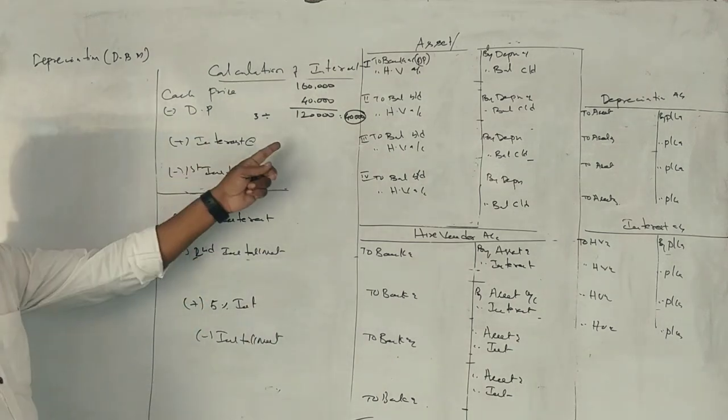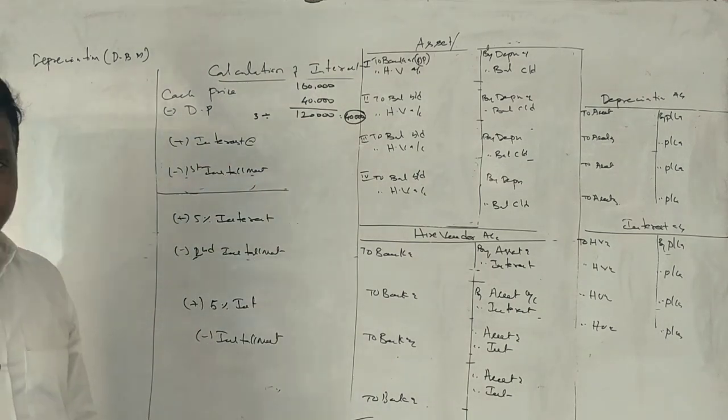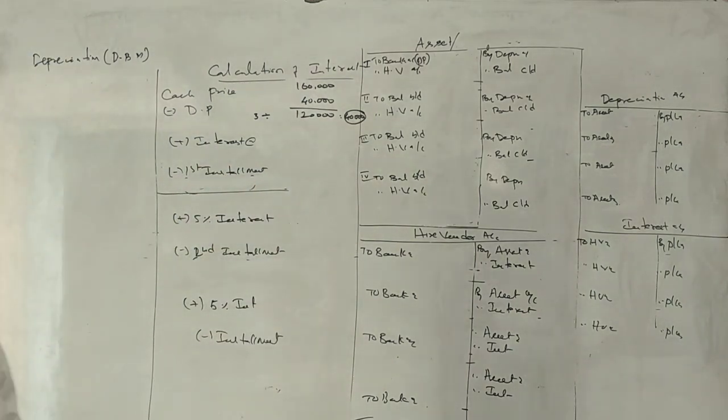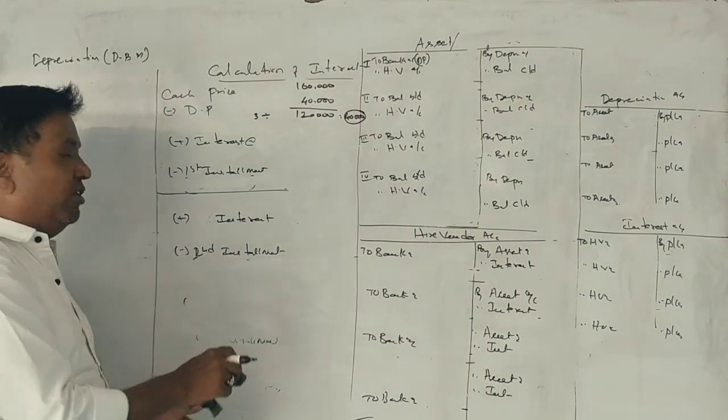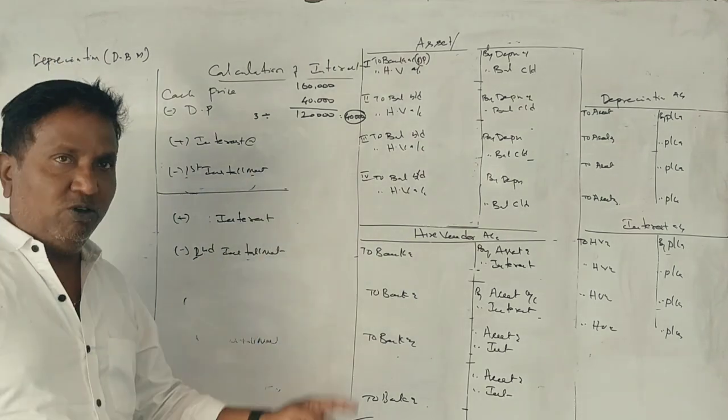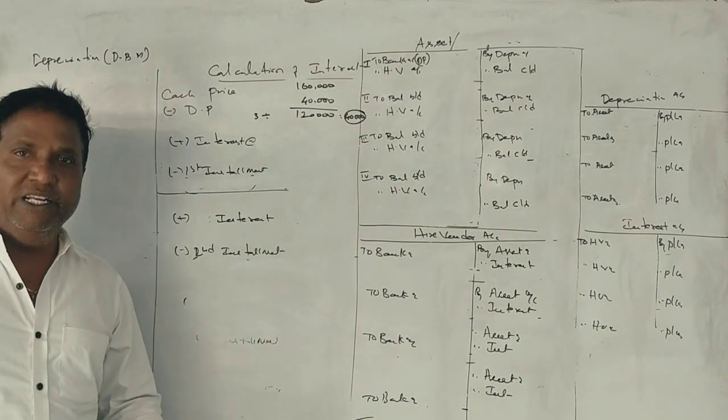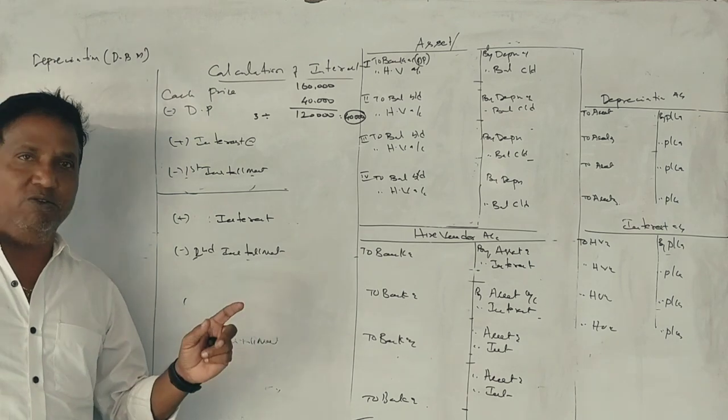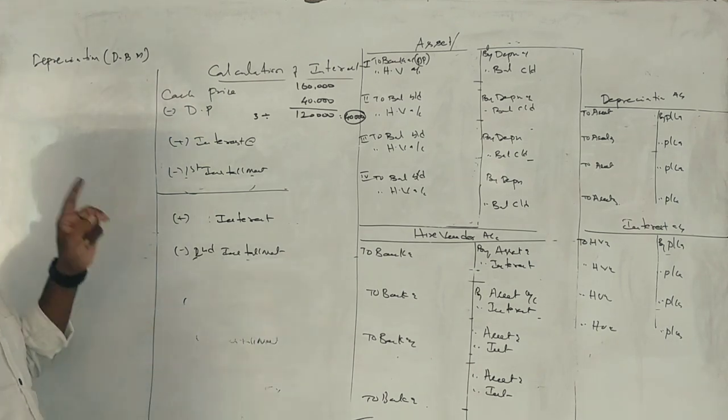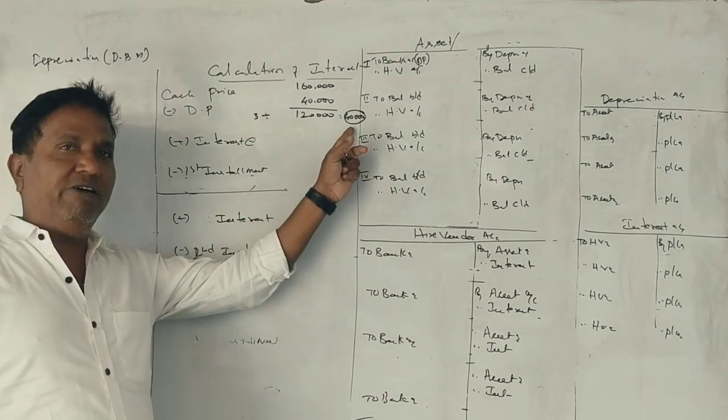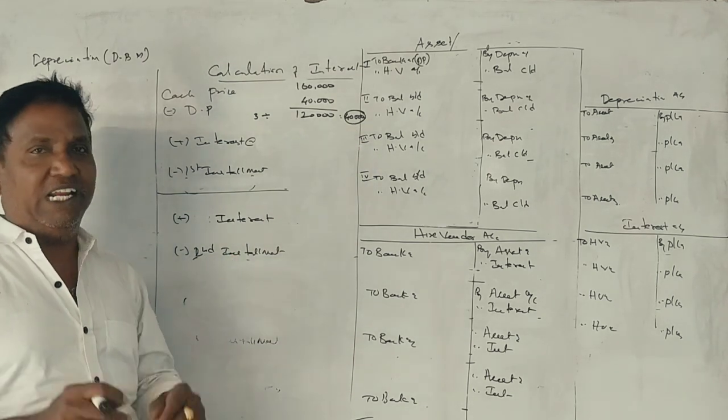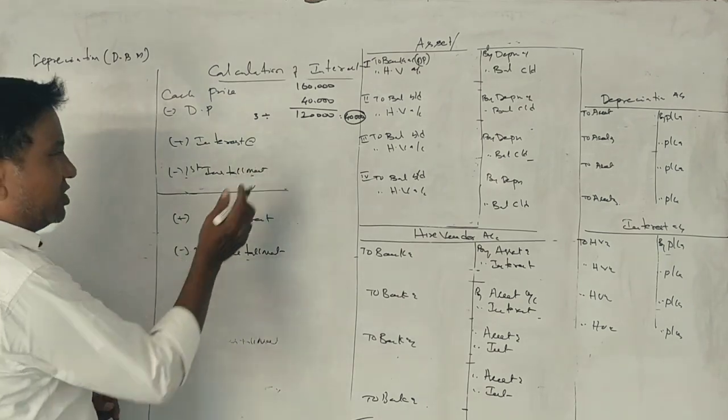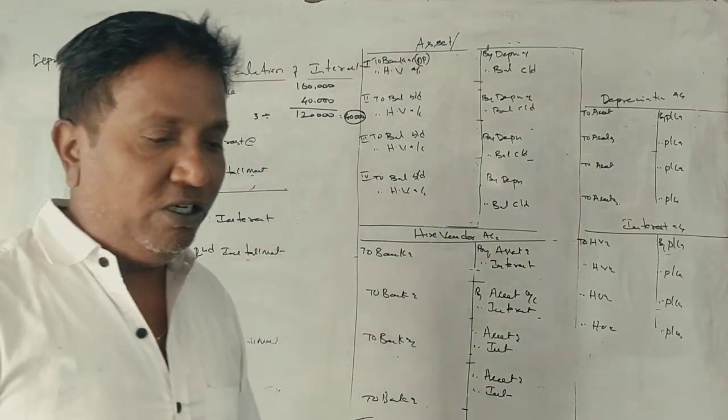If you have three installments, then you have interest. So what's the case? Interest is 20%. Interest calculation: for the first installment, you take the outstanding amount and calculate 20% interest on that.